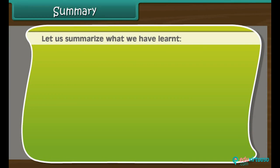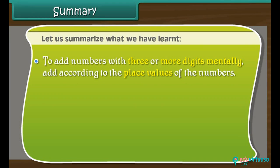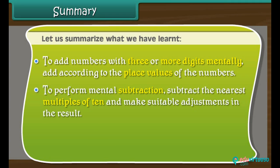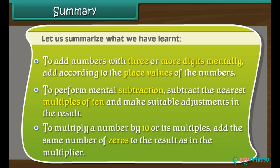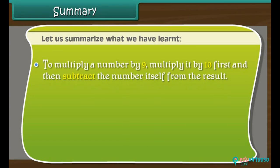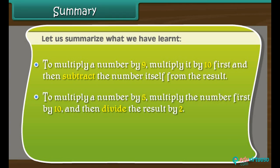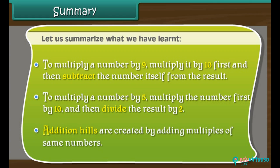Let us summarize what we have learned. To add numbers with 3 or more digits mentally, add according to the place values. To perform mental subtraction, subtract the nearest multiple of 10 and make suitable adjustments in the result. To multiply by 10 or its multiples, add the same number of zeros as in the multiplier. To multiply by 9, multiply by 10 first then subtract the number itself. To multiply by 5, multiply by 10 then divide by 2. Addition Hills are created by adding multiples of the same number.